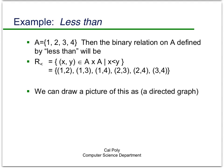Let's do some simple examples to solidify the concepts. Let A be the set {1, 2, 3, 4} and look at a binary relation on A defined by the less-than operator. We say the relation R (less than) is the set of ordered pairs (x, y) in A cross A where x is less than y. So: 1 < 2, 1 < 3, 1 < 4, 2 < 3, 2 < 4, and 3 < 4. Any other ordered pair won't satisfy that the first element is less than the second.